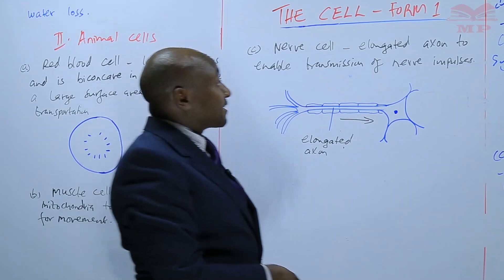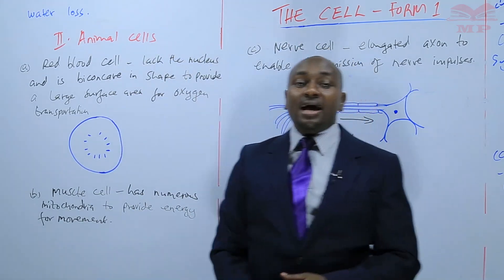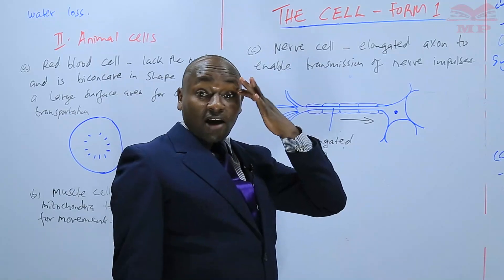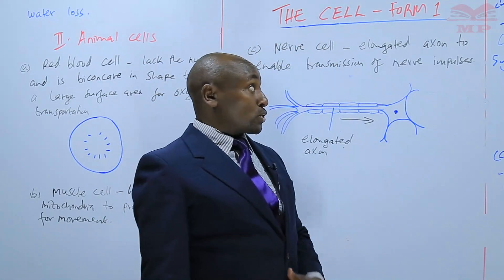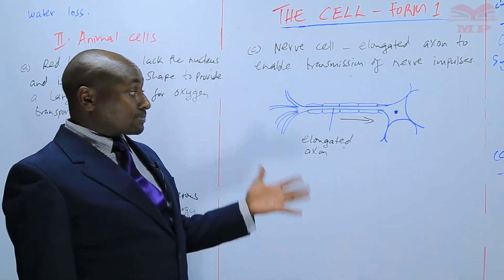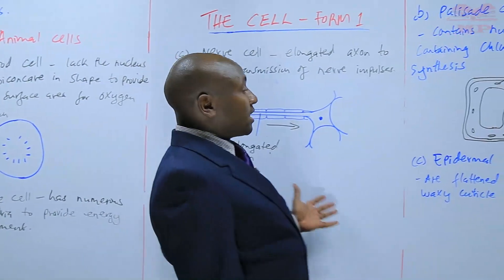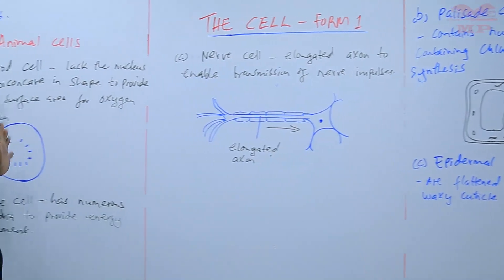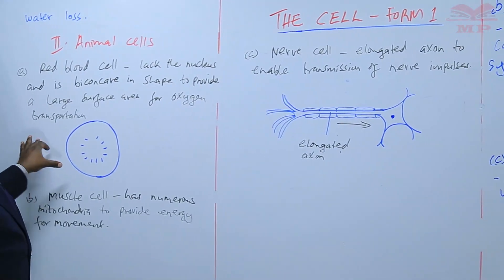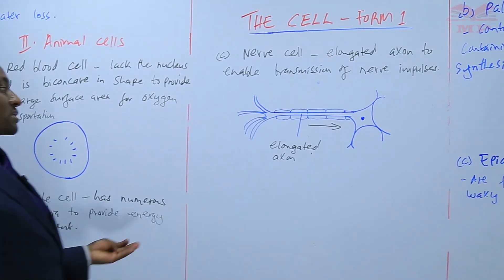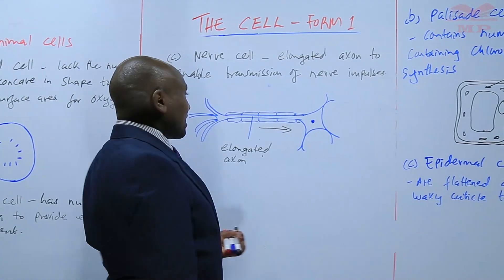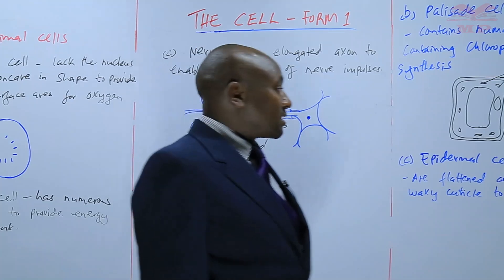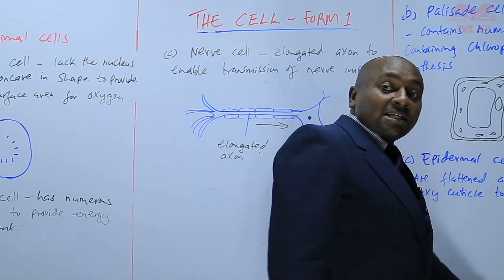Those are different ways in which cells are specialized to perform certain functions. We have seen plant cells — for example, the root hair cell, the palisade cell, and the epidermal cell — and animal cells — the red blood cell, a muscle cell, a nerve cell, and so on. They are specialized in a particular way so that they can carry out a certain function.